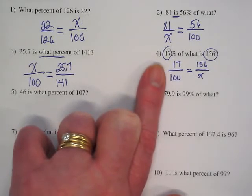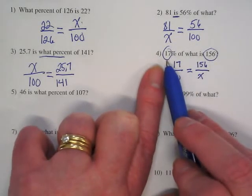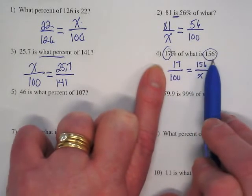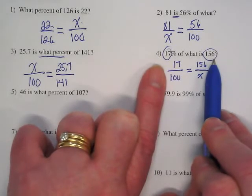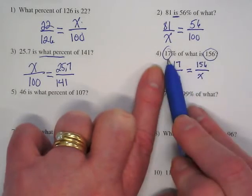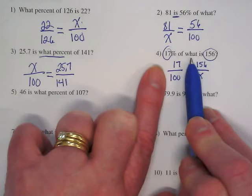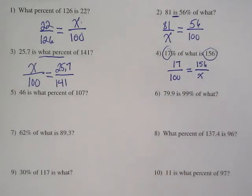Let me read it out loud again and see if those of you who reversed it can see what I'm saying. 17% of something is 156. That's telling us that this is the part. It could be rewritten as 156 is 17% of what? You're looking for part versus whole. Feel better?